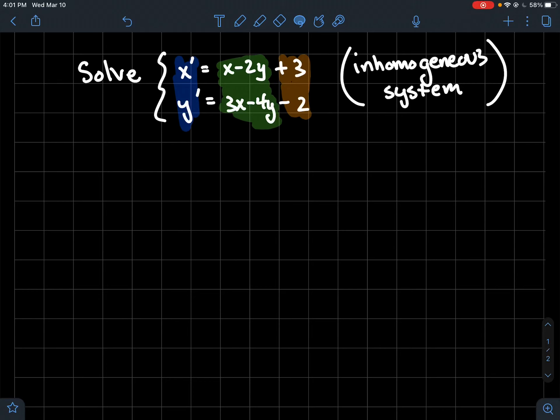This video we're going to talk about how to solve an inhomogeneous system of differential equations, or maybe another word for inhomogeneous is non-homogeneous system. So here's my example: solve the system here. What makes it inhomogeneous is the orange part, the plus three and the minus two. They don't have my functions x or y attached to them.